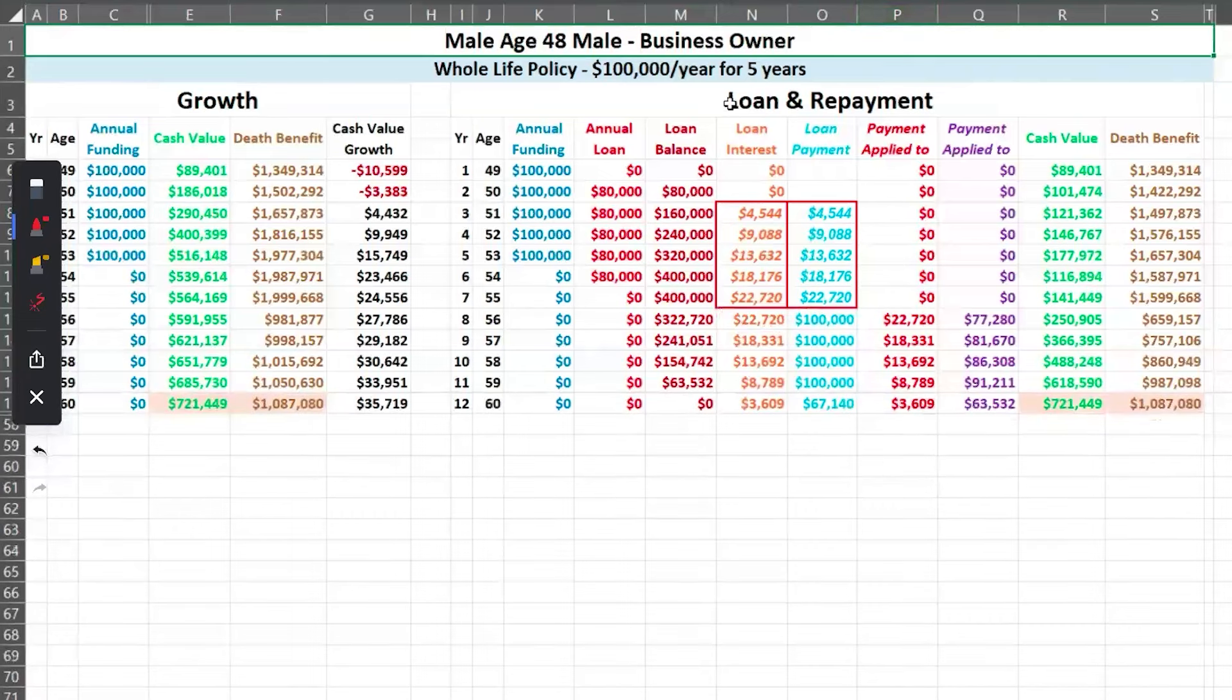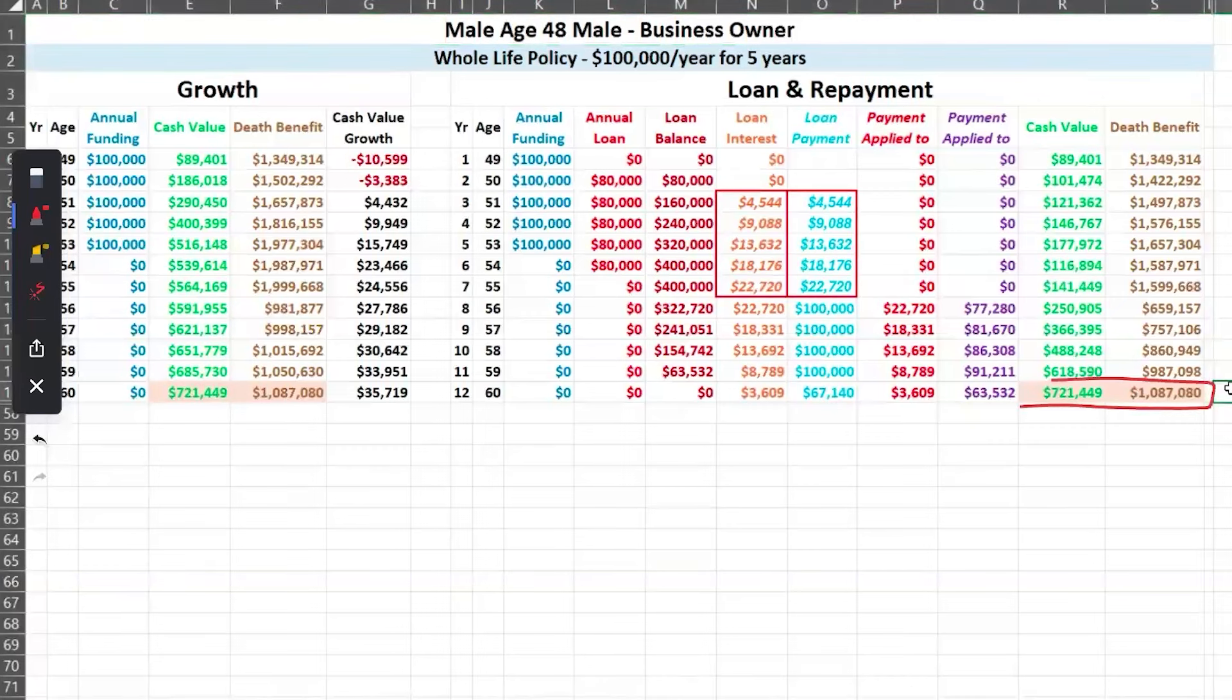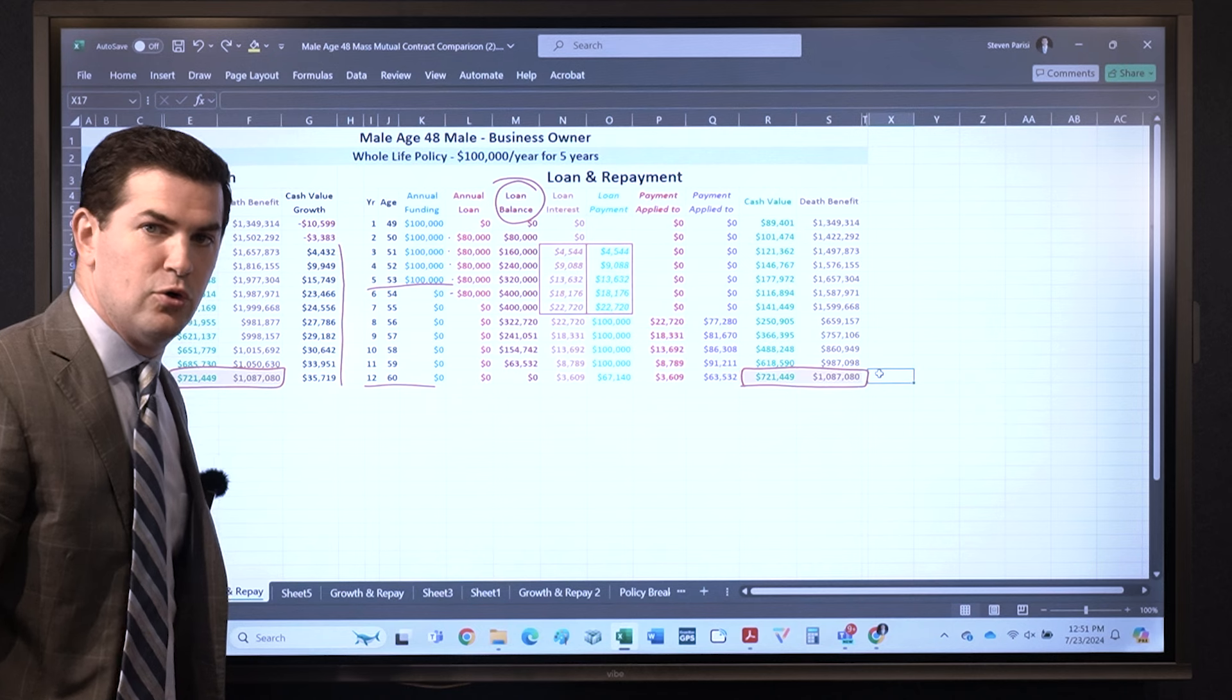Look at that, and look at that. So when he's used this every year, taking this for his business which earns the highest return, he's still getting this. So now he knows I can get $500,000 in and at the end of the road at age 60 I've got $721,000.